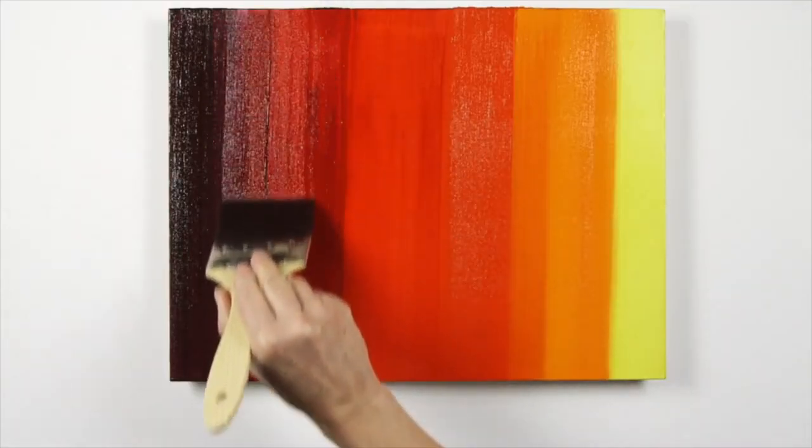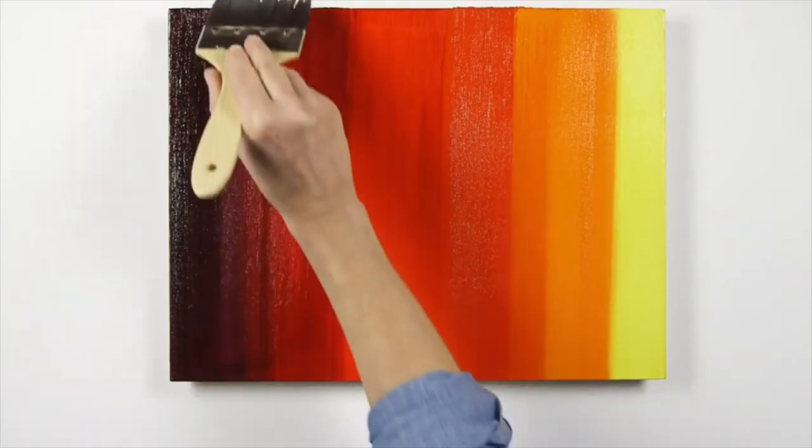You can soften adjacent colours with a dryer synthetic brush which you can clean between each colour.